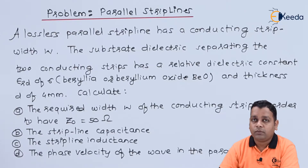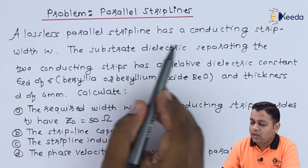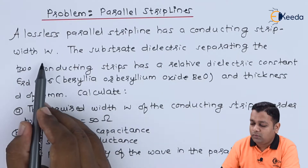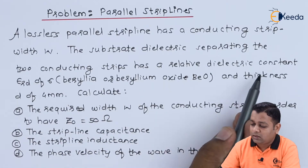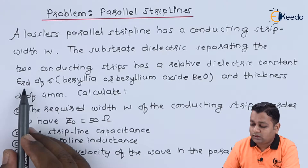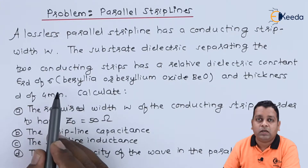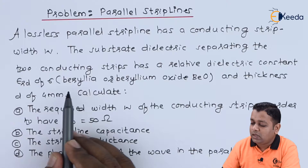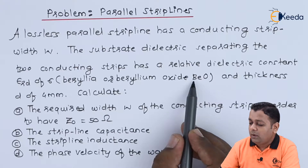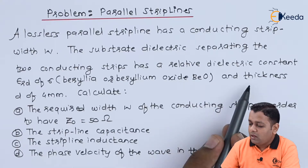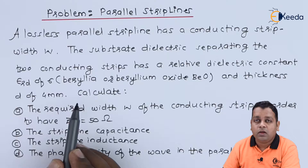The problem statement: a lossless parallel strip line has a conducting strip width w. The substrate dielectric separating the two conducting strips has a relative dielectric constant εrd equal to 6 — the material is beryllia or beryllium oxide (BeO) — and it has a thickness d equal to 4 millimeters.